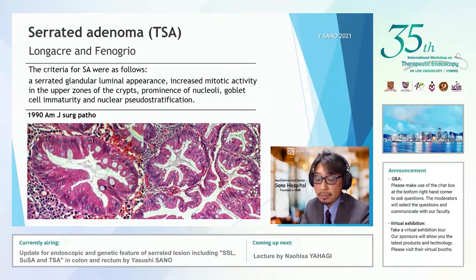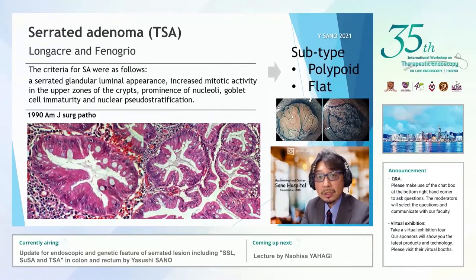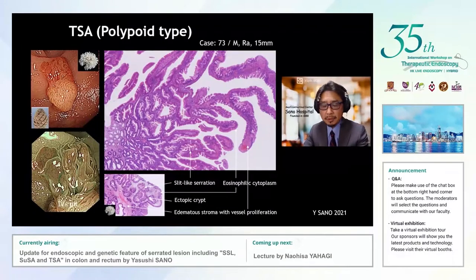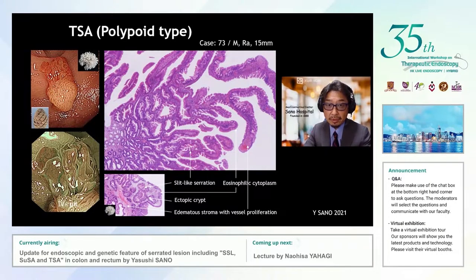Next, I'd like to talk about traditional serrated adenoma. The concept of traditional serrated adenoma was reported by Longacre and Fenoglio-Preiser in 1990, and it included two subtypes: flat and polypoid type. The polypoid type of traditional serrated adenoma is characterized by the pine cone-like morphology, and histopathologically, eosinophilic cytoplasm, slit-like serration, and adenomatous stroma with basal proliferation are observed.